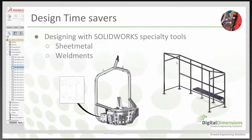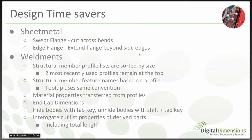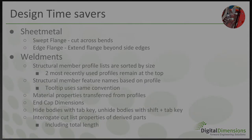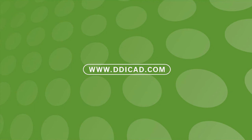That wraps up the session. In the sheet metal and weldments section we saw: swept flange can now cut across bends for flat patterns, edge flange now extends beyond side edges, structural member profile list is sorted and remembers recent selections, feature names are based on profile, tooltip uses the same convention, material properties transfer from library features, end cap dimensions are directly accessible, tab key hides/shows bodies in multi-body parts, and cut list properties including total length transfer to derived parts. Thanks everyone for attending today's webinar — we look forward to seeing you next time.